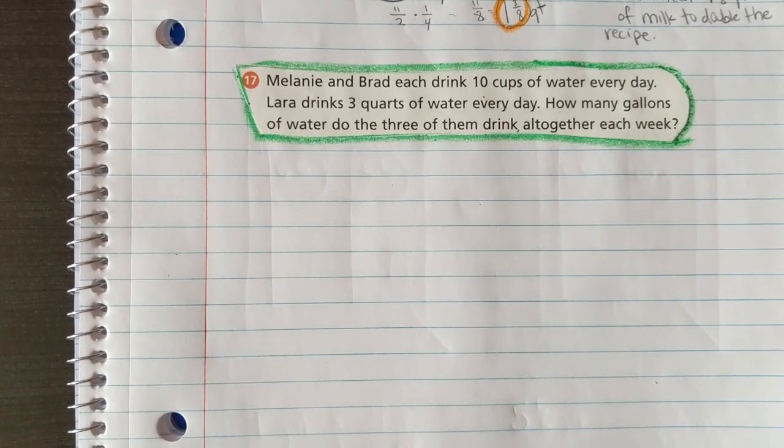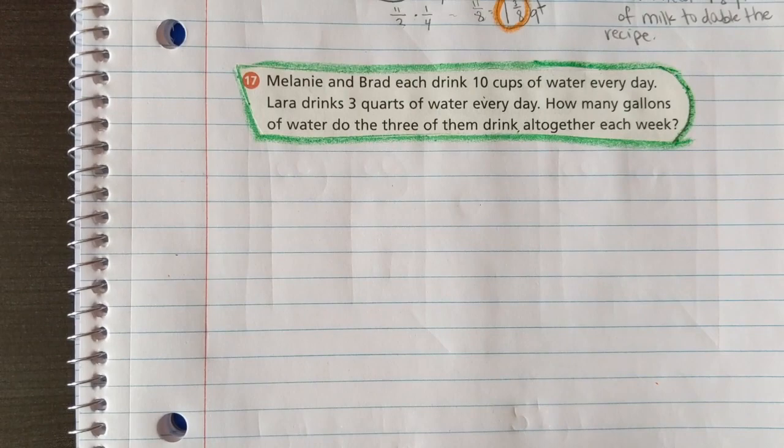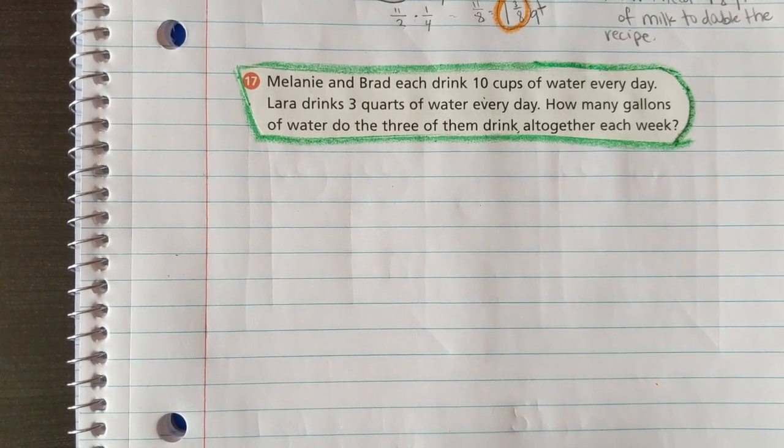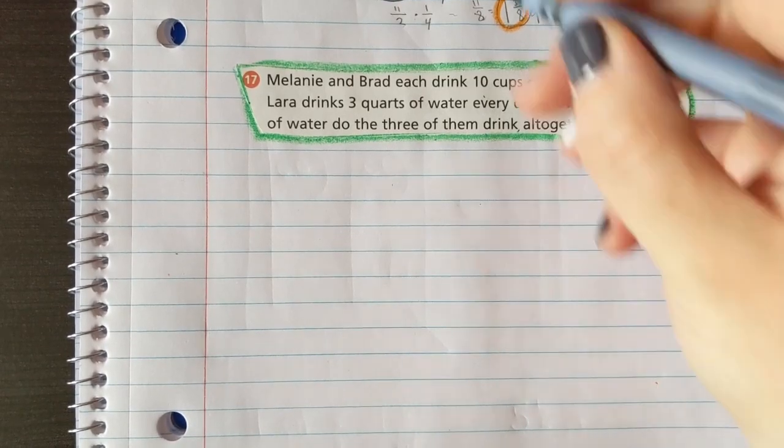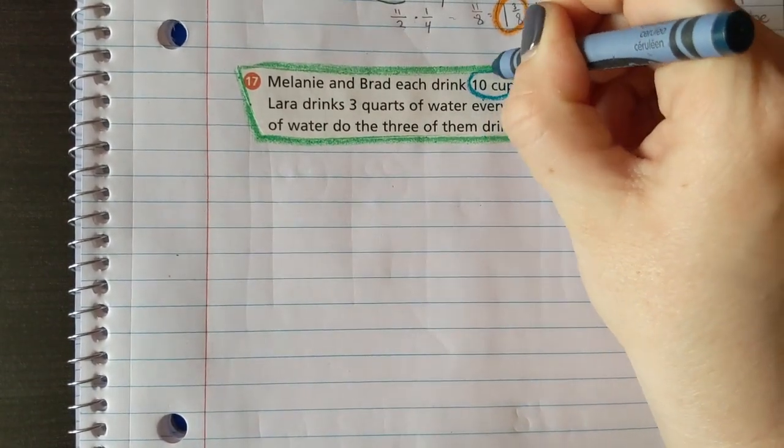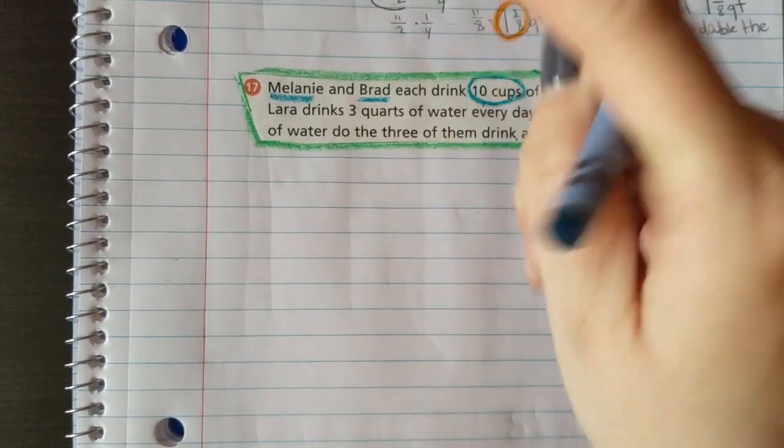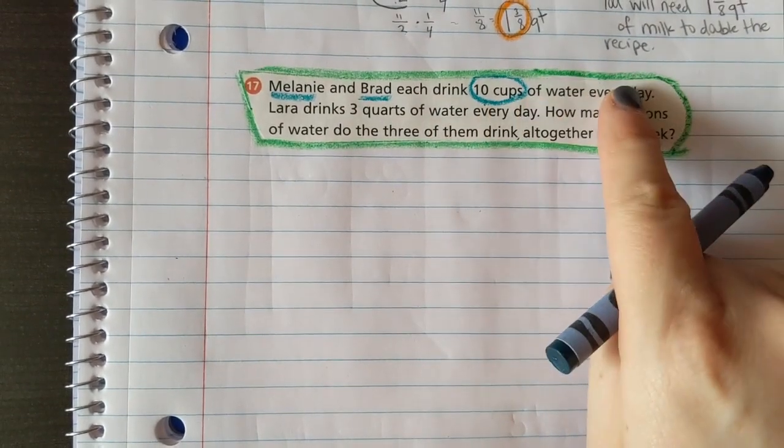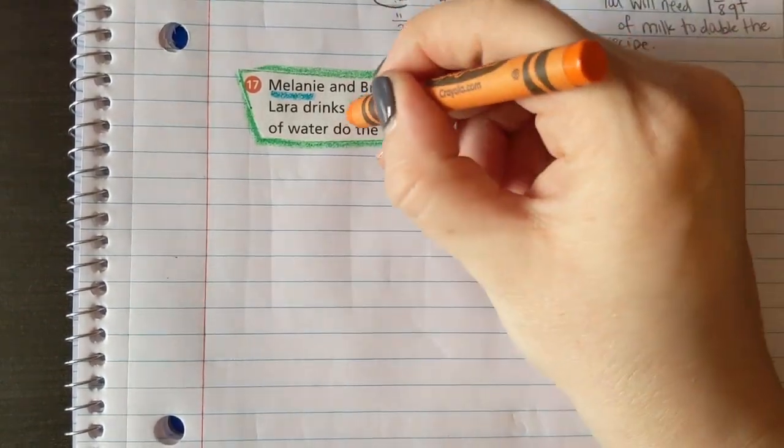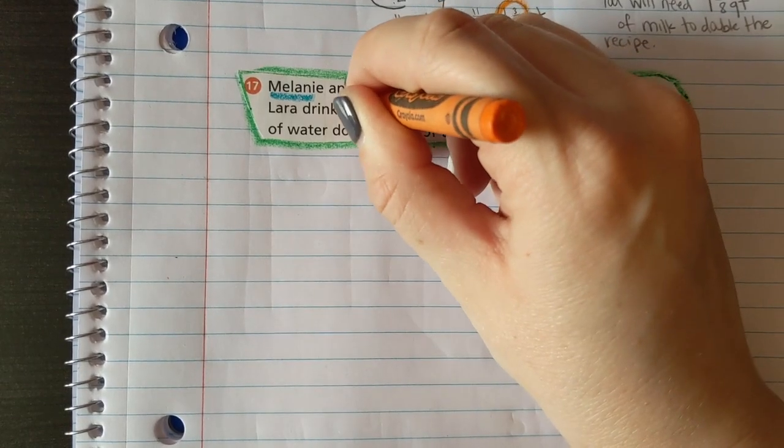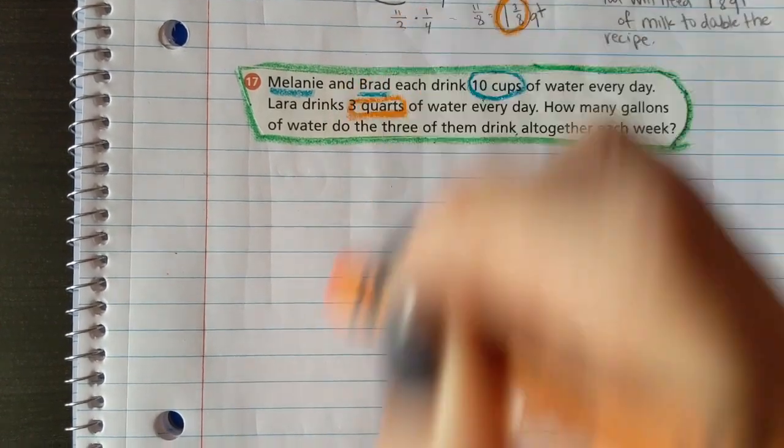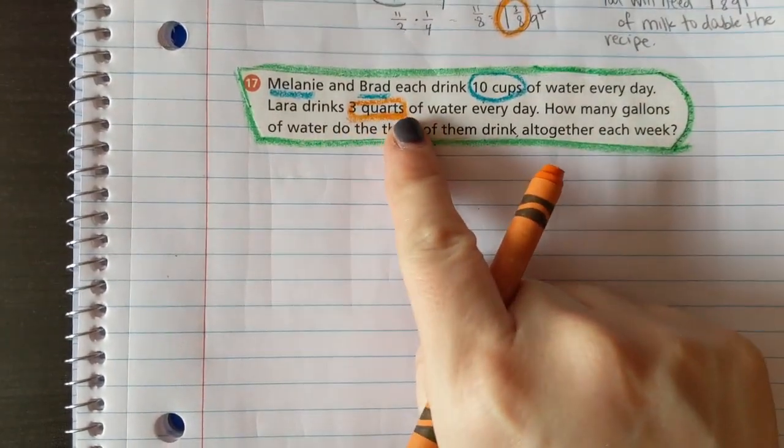That Melanie, she is awesome. Laura drinks three quarts of water every day. Oh man, we have cups and quarts again. Same colors - we have cups. Melanie and Brad are drinking 10 cups of water every day, Laura is three quarts, so don't think that she's doing less.